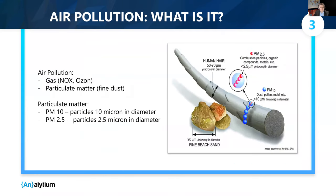Air pollution comes in two flavors: gases and particulate matter. For our hackathon challenge, we focused on particulate matter sized 2.5 microns. How small is small? Human hair is between 50 to 70 microns. 20 particles of PM2.5 would fit across a human hair. These are so small that they get deep inside human lungs and even into the bloodstream.